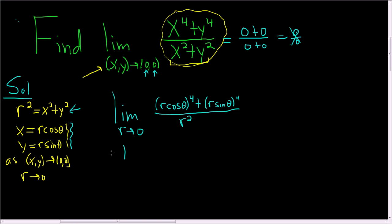So this is equal to the limit as r approaches 0. We can rewrite the numerator. This is r to the 4th and then cosine of theta to the 4th power plus r to the 4th and then sine of theta to the 4th power. And in the denominator, we still have r squared.